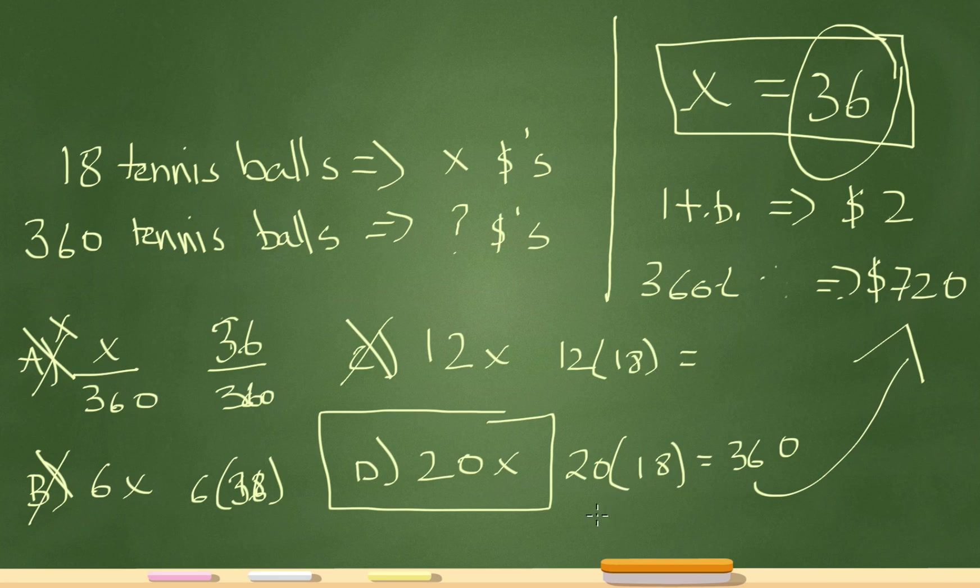And then lastly, if I do 20 times 36, that gives me 720. So 20 times 36. All I'm doing is replacing that X with 36 now, and that gives me 720. Again, the answer is D.